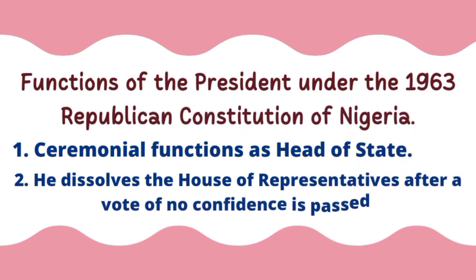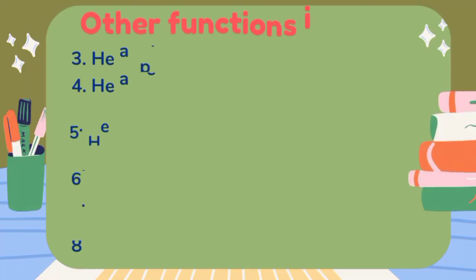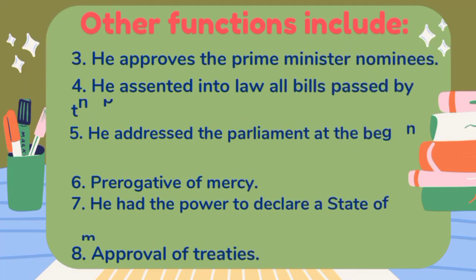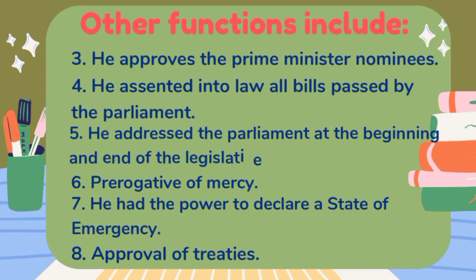Now let's look at the functions of the president under the 1963 Republican Constitution. The president performed ceremonial functions as head of state. He dissolves the House of Representatives after a vote of no confidence is passed. He approves the prime minister's nominees, assents to all bills passed by parliament, and addresses the parliament at the beginning and end of every legislative year. He also has the power of prerogative of mercy to pardon offenders, and had the power to declare a state of emergency.